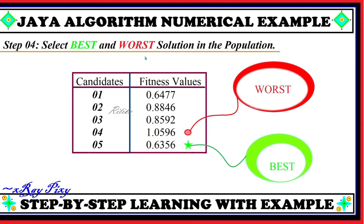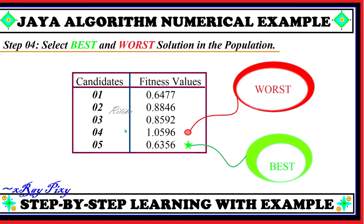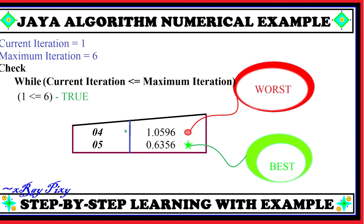Using this fitness function, we computed the fitness value for each candidate. In step 4, we will select the best and worst solution in the current population. The best solution is the candidate with the minimum value, and the worst solution is the candidate with the maximum value. The fifth candidate has the minimum value, so it is the best solution, and the fourth candidate is the worst.